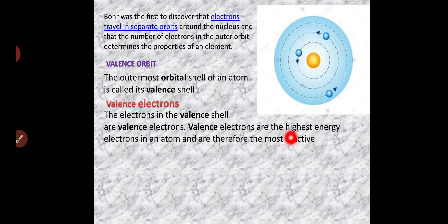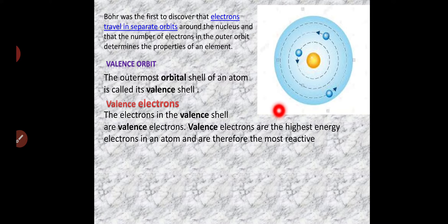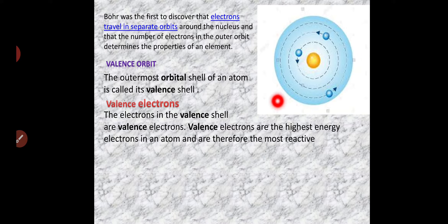Valence electrons are the highest energy electrons in an atom and are therefore the most reactive. This means the electrons rotating in the last orbit may react with other elements — they may take electrons, share themselves with other atoms, or be gained by another element.